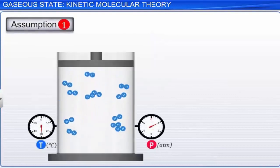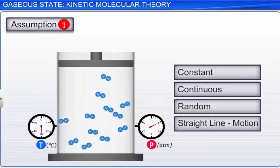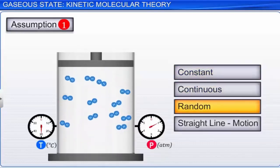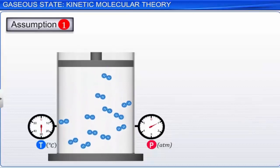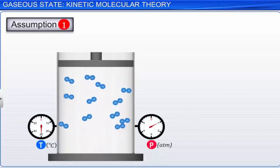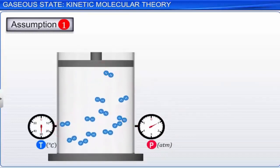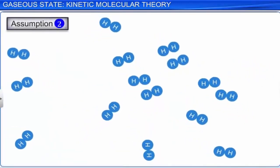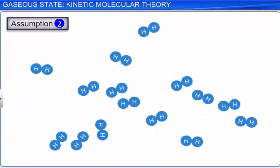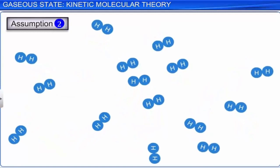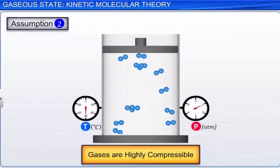Assumption 1: Gases consist of a very large number of extremely small particles called molecules, which are in constant, continuous, random, and straight-line motion. During their motion, they collide with each other and against the walls of the container. The pressure exerted by the gas is due to the bombardment of its molecules on the walls of the container. Assumption 2: The molecules of a gas are separated from each other by great distances; hence the actual volume of all the molecules of the gas is negligible when compared to the total volume occupied by the gas. This assumption is true as gases are highly compressible.